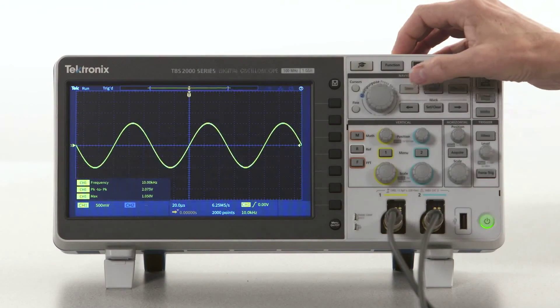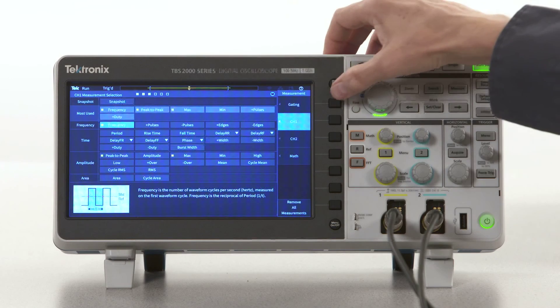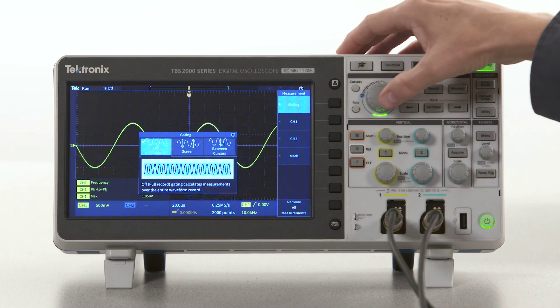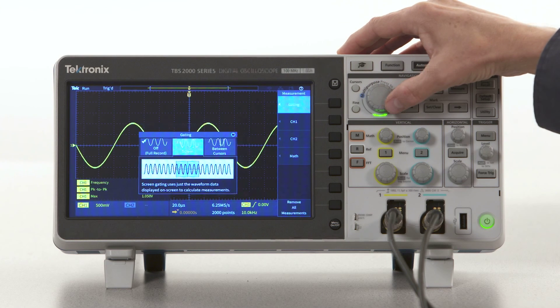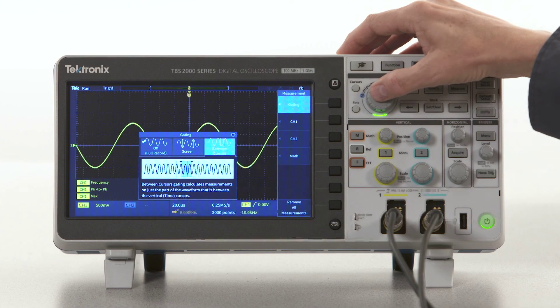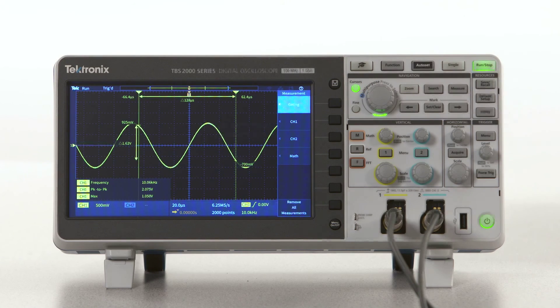The other options are screen gating, which applies the measurement to the portion of the waveform that's on the display, and cursor gating, which measures the waveform between time cursors.